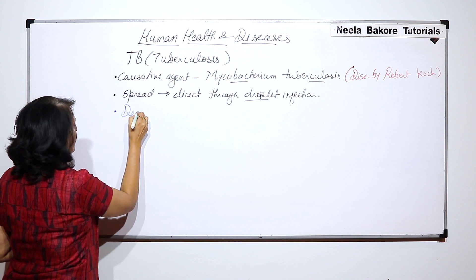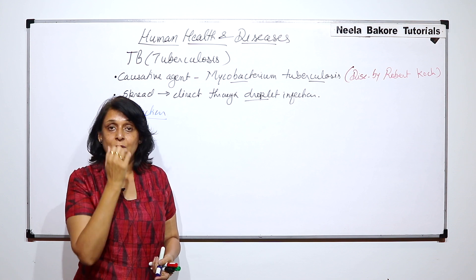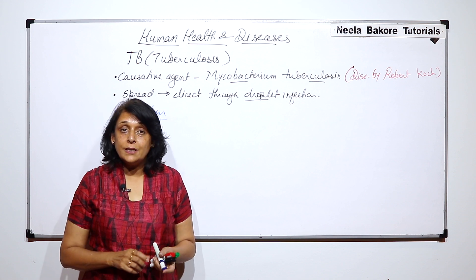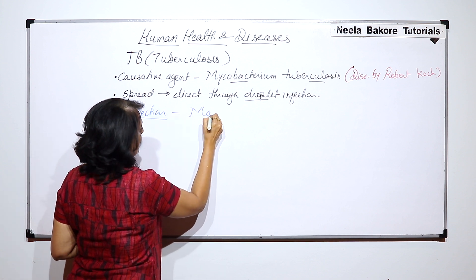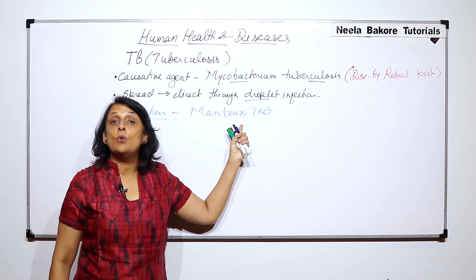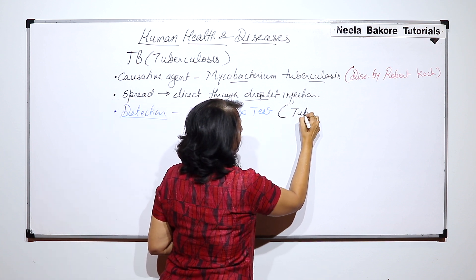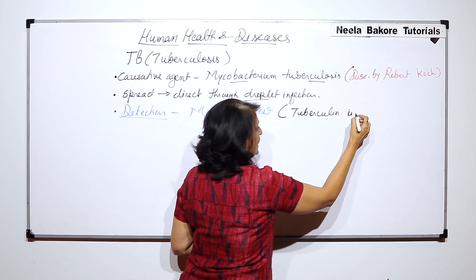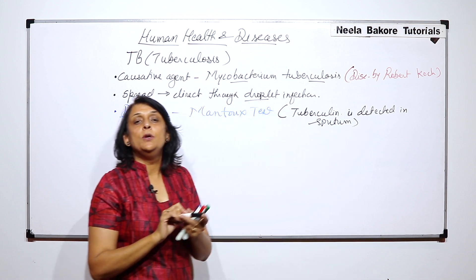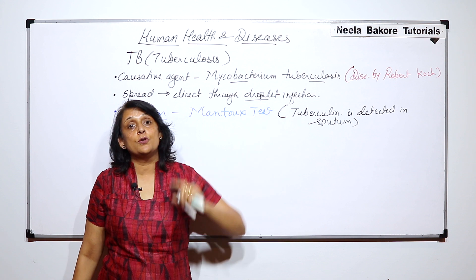How do we detect this disease? There are some simple symptoms on the basis of which we can identify whether a person has the disease or not. But for actual confirmed detection, there is a test known as the Mantoux test — spelled M-A-N-T-O-U-X. In this test, tuberculin is detected in sputum. That thick mucus or saliva produced contains this toxin, tuberculin, which is produced by the bacteria.